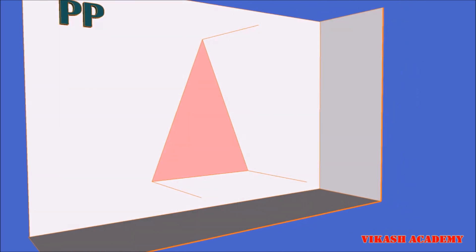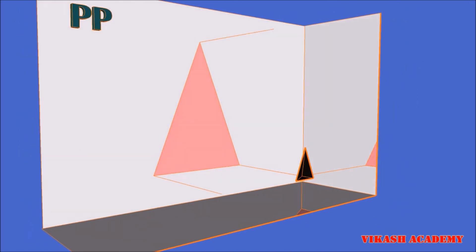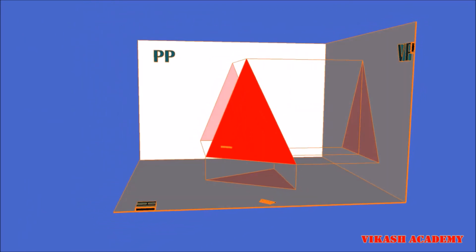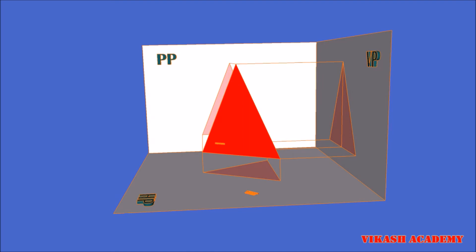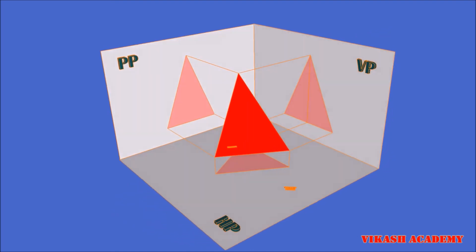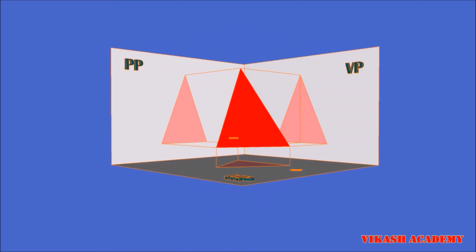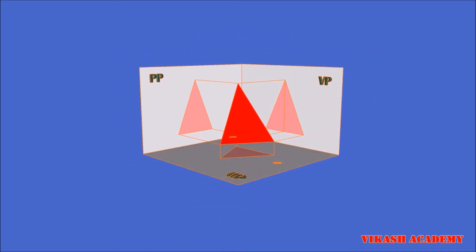of this pyramid as well as the apex of this pyramid to the profile plane. By these projector lines we will obtain three points on the profile plane, and when we join these points we finally obtain a triangle on the profile plane. This will be our right hand side view.